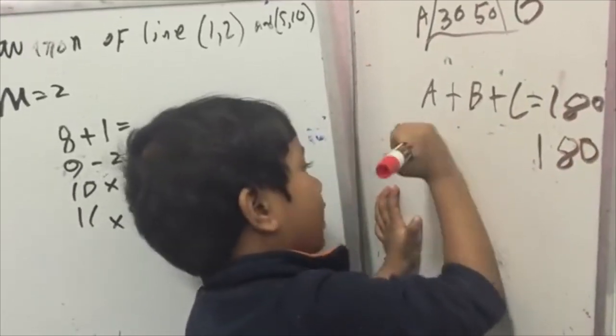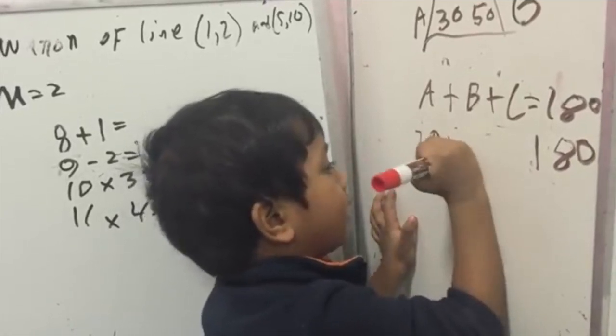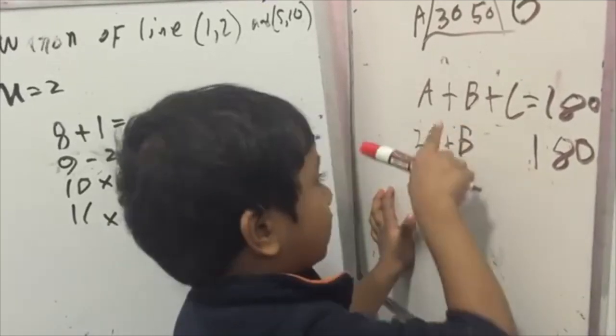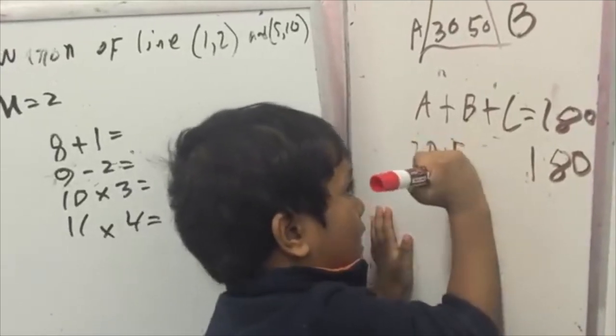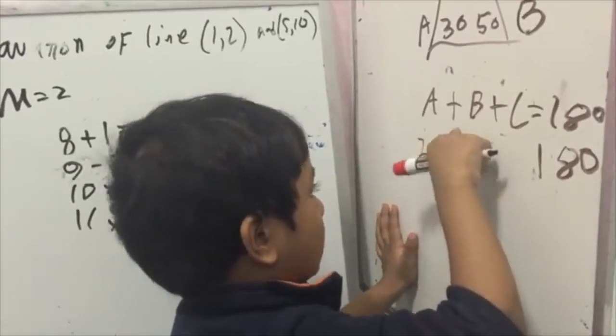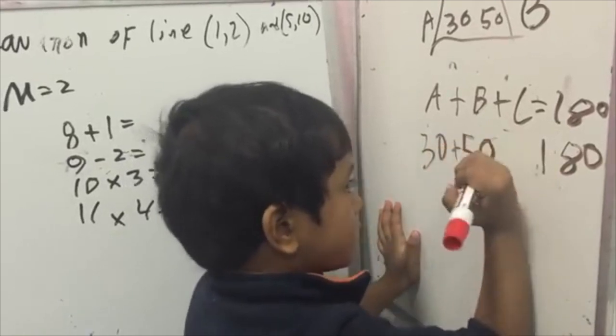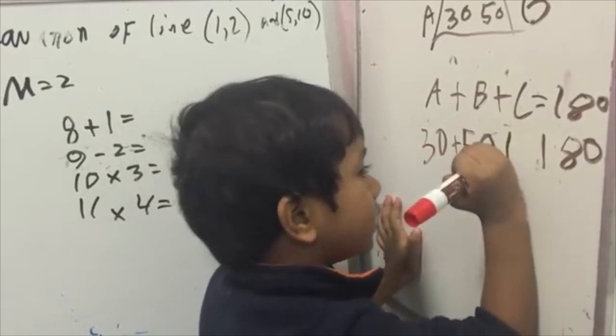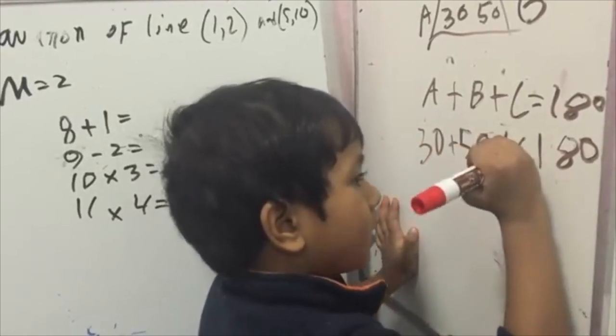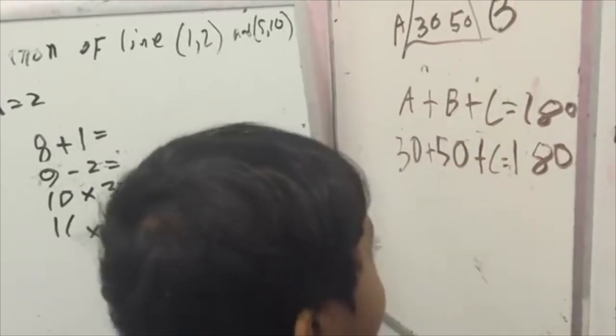You know A is 30 and you know B is 50, that's why plus C is 180 degrees.